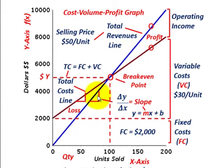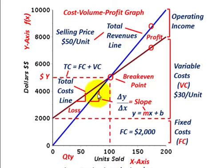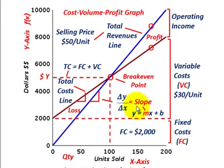You want to establish the slope and the equation of your line. In this case it's a linear equation and easy to determine, but if you had a nonlinear relationship the equation would become more complex. So we've taken care of our total revenues — it's simply the selling price per unit times the quantity sold.